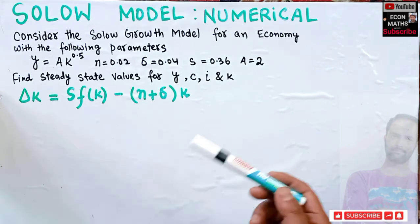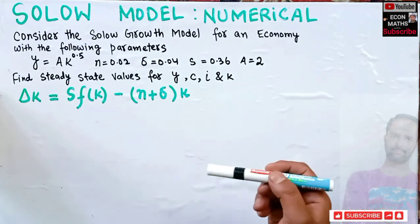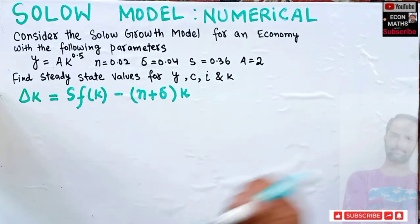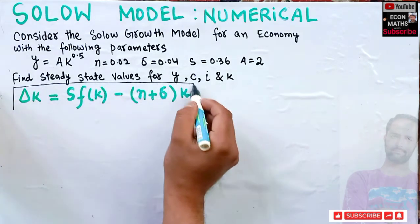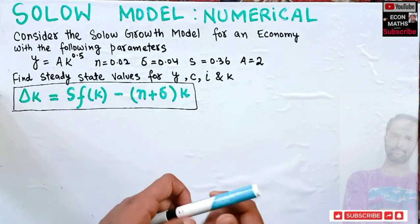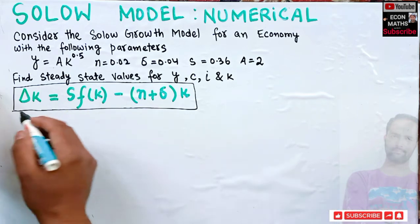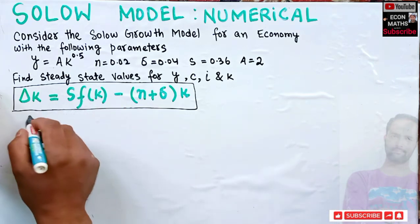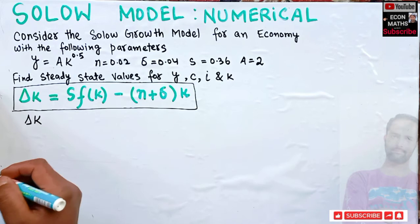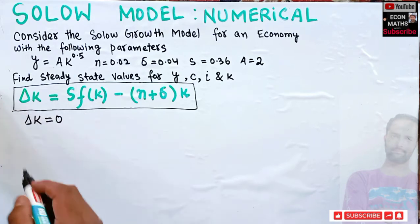I have explained in detail how to derive this equation in another video — you can check the link in the description box or the I button. Now, to find the steady state values: at steady state, Δk = 0, meaning capital per worker does not change.